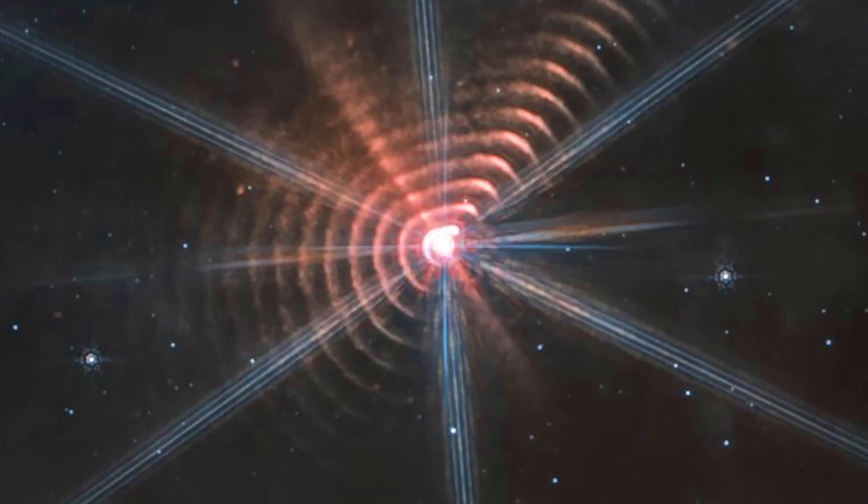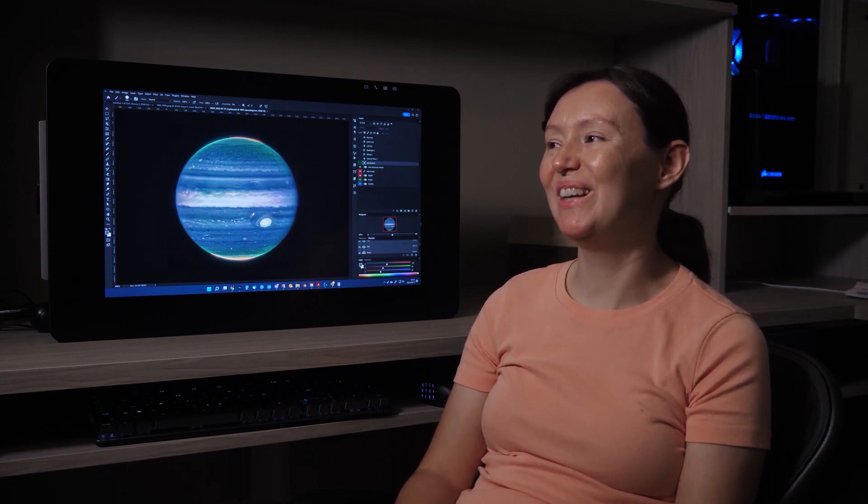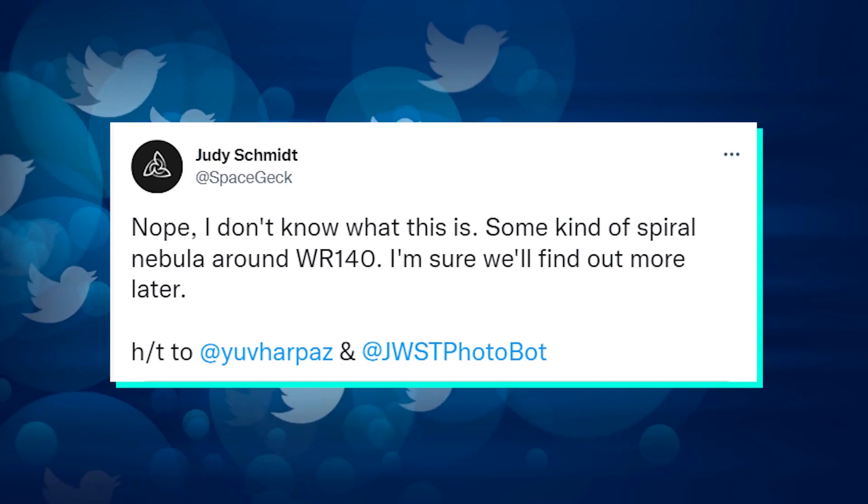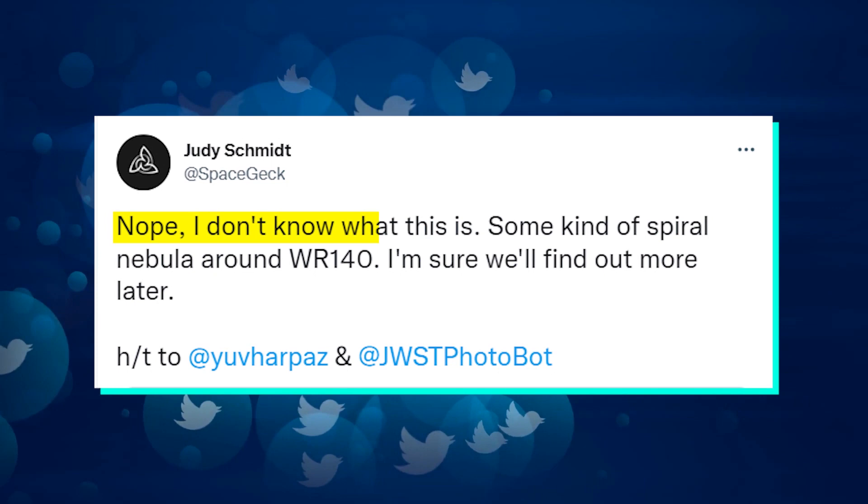Recently, the image was posted on Twitter by Judy Schmidt, a citizen scientist. Judy Schmidt specializes in analyzing photos taken by observatories and has assisted in the creation of numerous Webb photographs. In her tweet, Schmidt said, nope, I don't know what it is, some kind of spiral nebula around WR-140. I'm sure we'll find out more later.